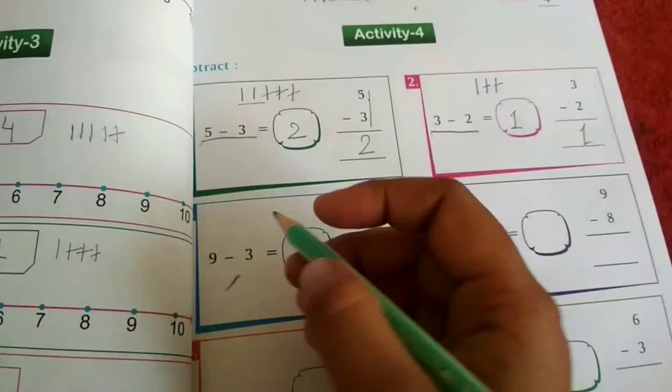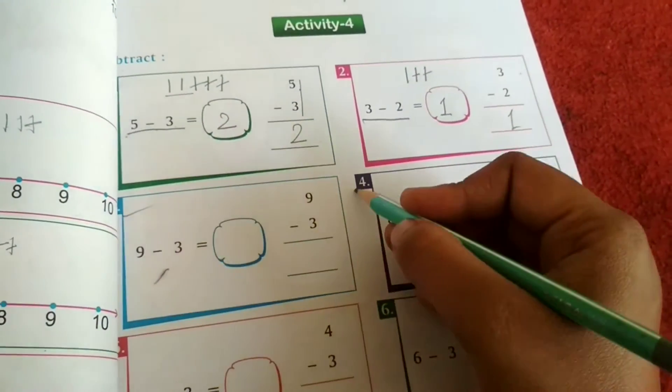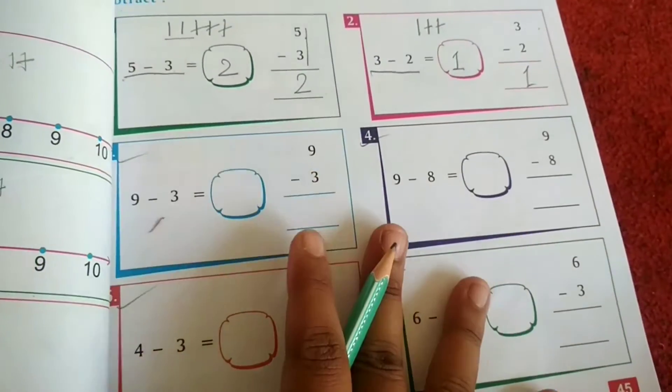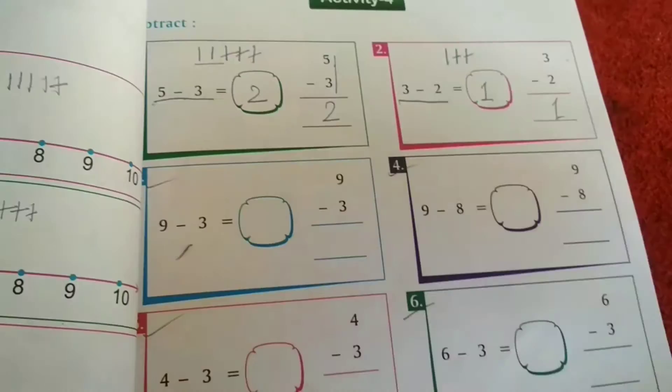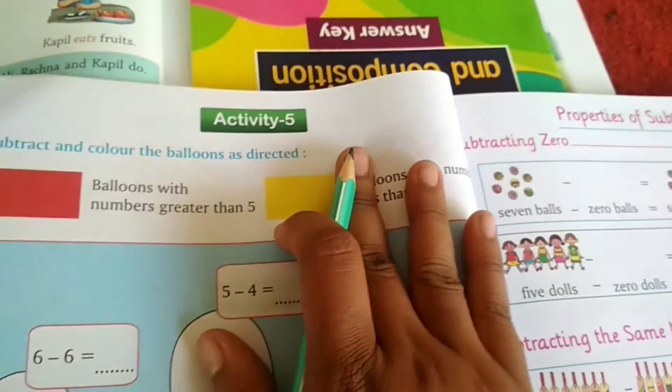So your 3, 4, 5, 6, you have to do by yourself. Okay. Now in activity number 5, we have something interesting over here.